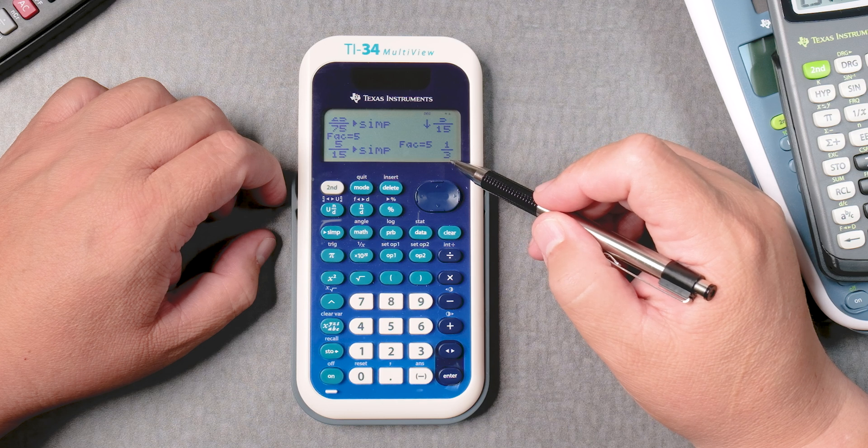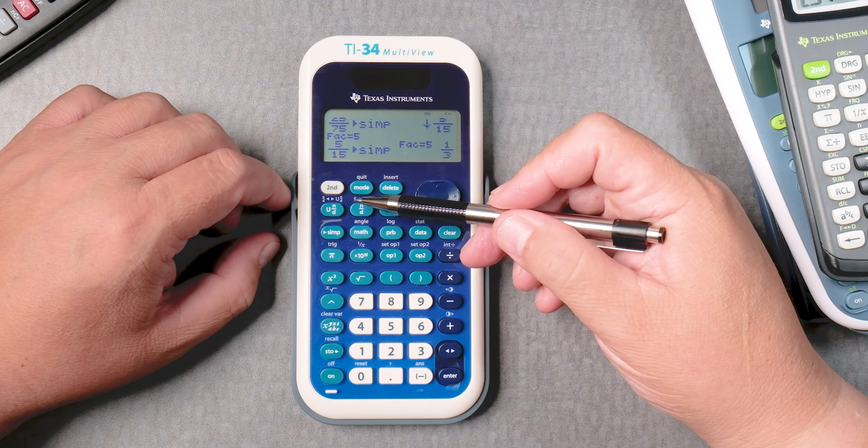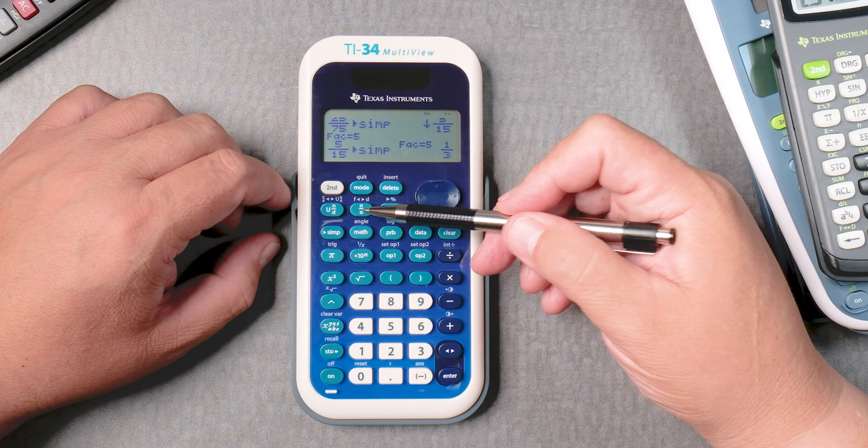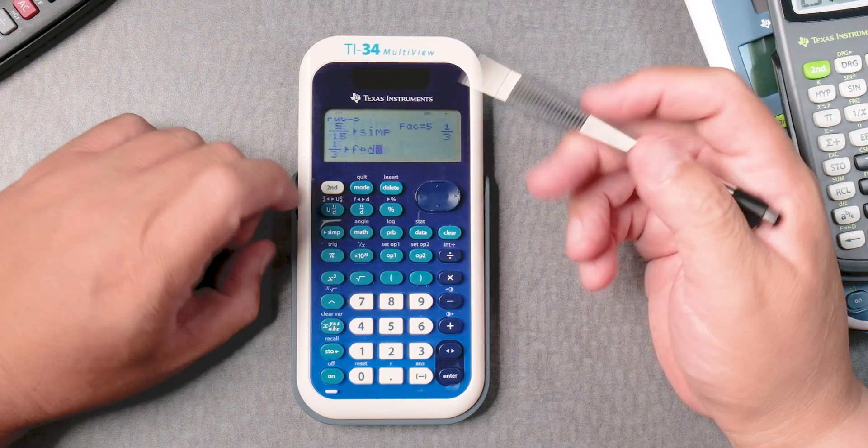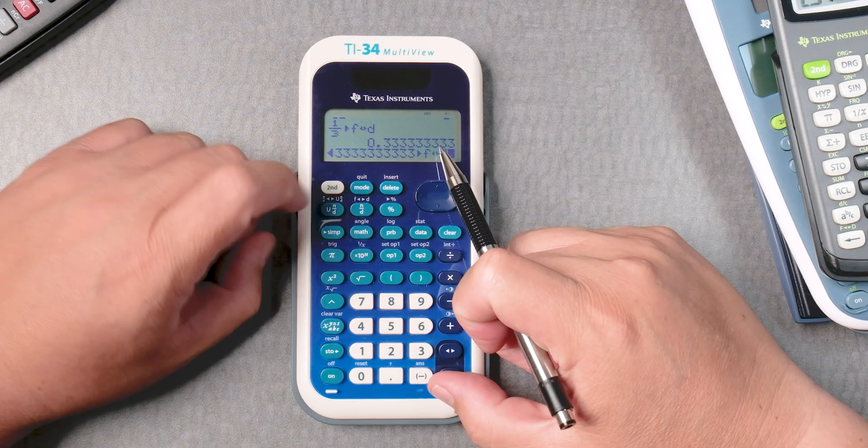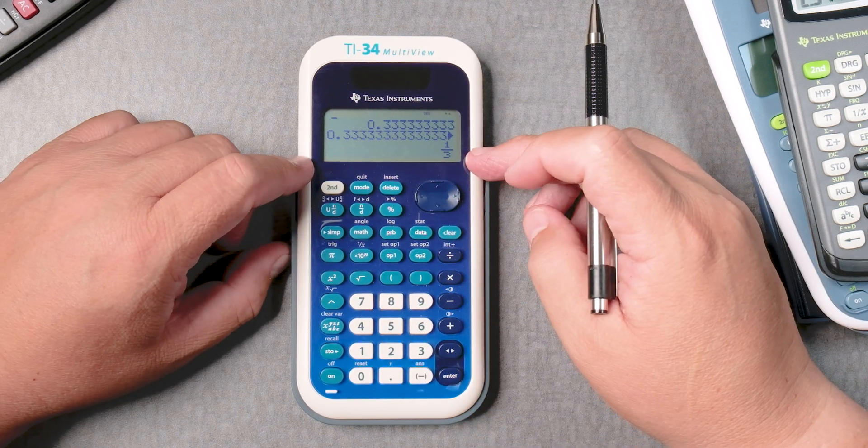What about if I want this fraction to be a decimal? Could I do that? Sure. Fraction to decimal is below the N D button, so second N over D, and it gives you the decimal. Press it again, and it gives you the fraction answer.